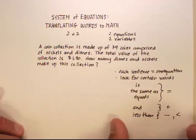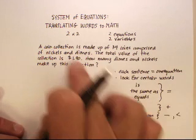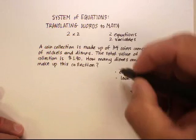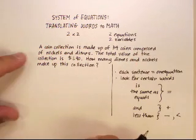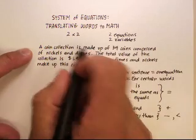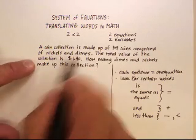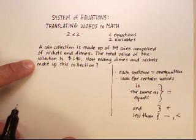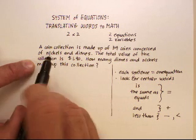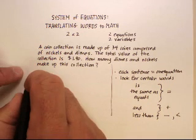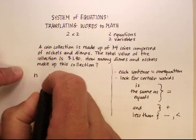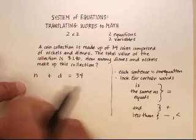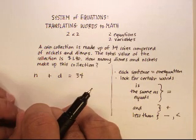So with that in mind, let's take a quick look at this particular problem, and let's see if we can use some of our hints over here. So it says, a coin collection is made up of 34 coins, comprised of nickels and dimes. So that should be one sentence. It should be one equation. It seems like the nickels and dimes is 34 coins. So there's our first equation. We've translated it right off the bat.